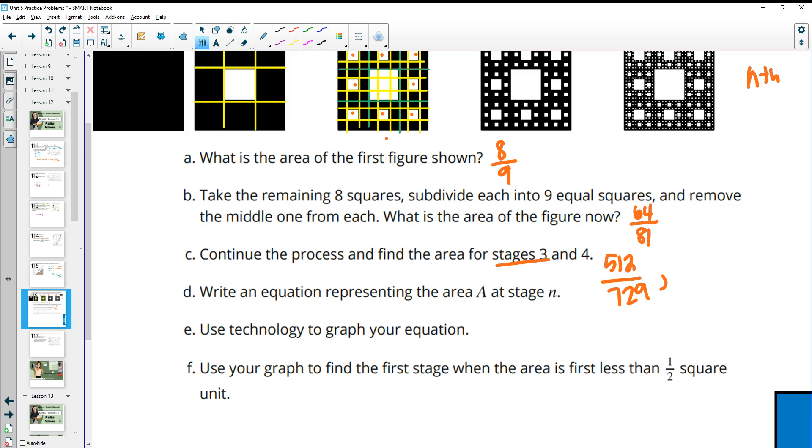And then if we do it for the fourth one, then that's going to be 8 to the fourth on top, which is 4,096 over 9 to the fourth on bottom, which is 6,561. And then the equation at stage n, the area at the nth stage is going to be equal to 8 to the n over 9 to the n.